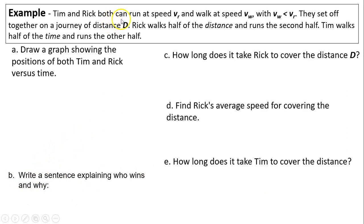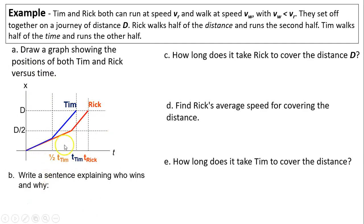Last question. Tim and Rick both can run at a speed vr and walk at a speed vw with vw less than vr. They set off together on a journey of distance d. Rick walks half the distance and runs the second half. Tim walks half the time and runs the other half. First draw a graph showing the position of both Tim and Rick versus time. So this is a d-t graph. So the red one is Rick. The blue one is Tim. How did I get Rick? Rick walks half the distance and another half the distance. This is walk. This is run. So because running has a steeper slope, because running speed is bigger. Here's Tim. Tim has half the time. So the time for one and time for the other, they are the same.